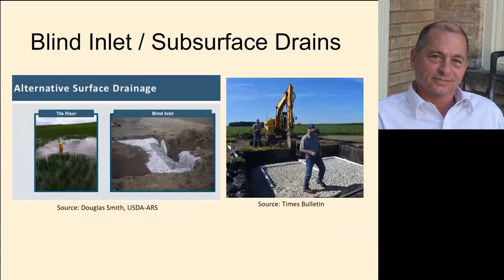We're also looking at blind inlet subsurface drains. You may be familiar with tile risers, where a wet spot in the middle of a field allows water to enter the tile drain and move underground and exit the field. A blind inlet is a gravel pad with a drain underneath, covered back up with soil. Farmers really like this because you can farm across it. It's effective at draining the low spot and reduces sediment moving into the tile drain, which also reduces the phosphorus attached to that sediment.